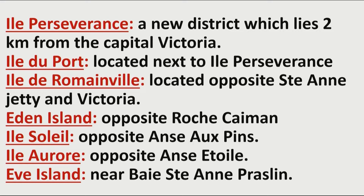We have the seven Reclaim Islands: Île Persévérance, a new district which lies two kilometers from the capital of Victoria; Île Dipot, located next to Île Persévérance; Île de Romainville, opposite Saint-Ange and Victoria; Île Den Island, opposite Roche Caiman; Île Soleil, opposite Pointe Conan; Île Aurore, opposite Sitoile; and Eve Island, near Beau Séjour, Praslin.